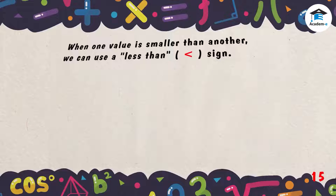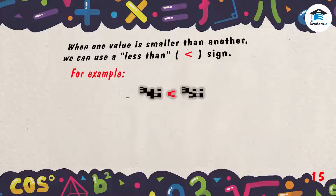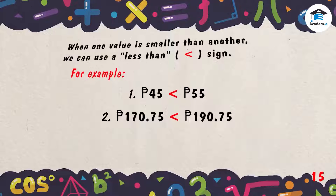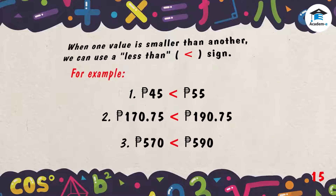When one value is smaller than another, we use the less than sign. First example: 45 pesos and 55 pesos — 45 pesos is less than 55 pesos. Second example: 170 pesos and 75 centavos is less than 190 pesos and 75 centavos. Third example: 570 pesos is less than 590 pesos.